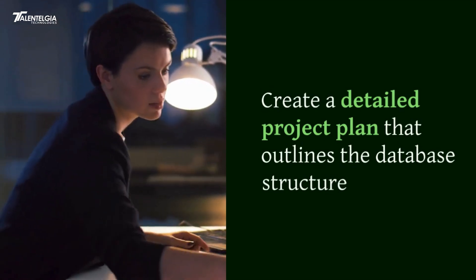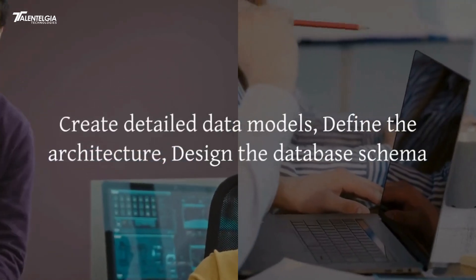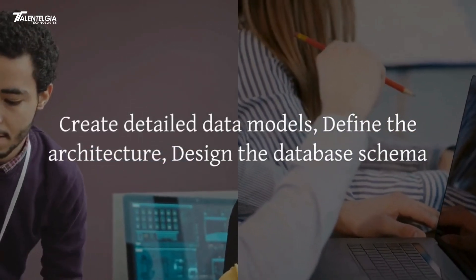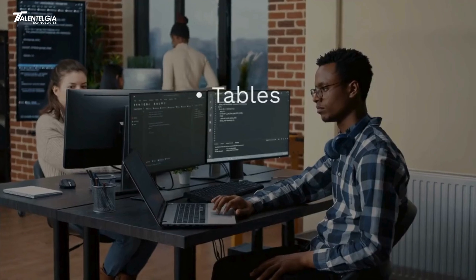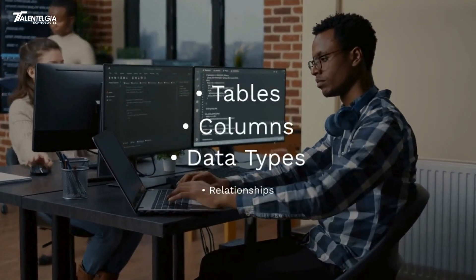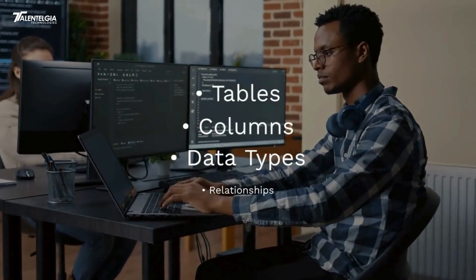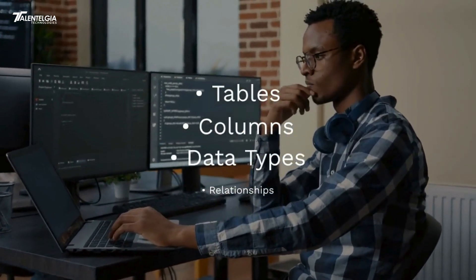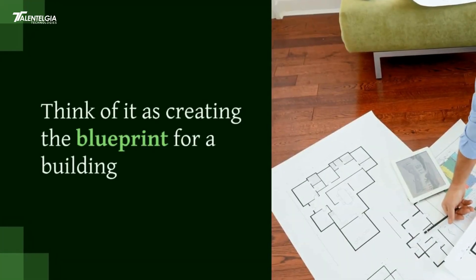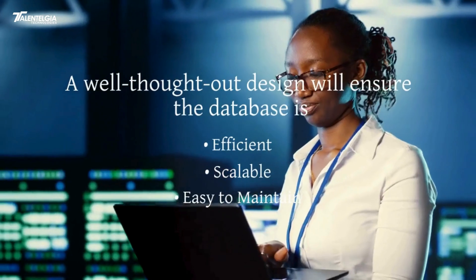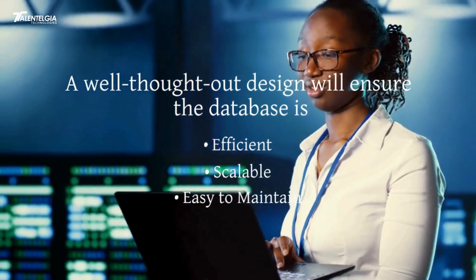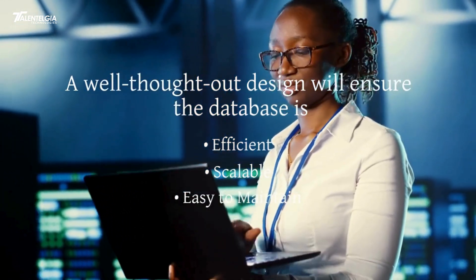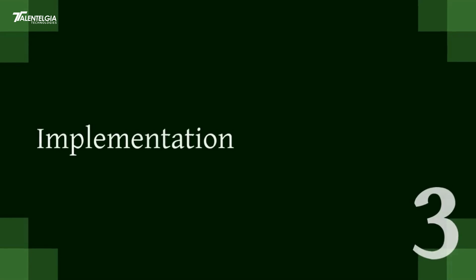Next up is the design phase. This is where we translate our requirements into a blueprint. We'll create detailed data models, define the architecture, and design the database schema. This includes specifying tables, columns, data types, and relationships between data entities. Think of it as creating the blueprint for a building — a well-thought-out design will ensure the database is efficient, scalable, and easy to maintain.